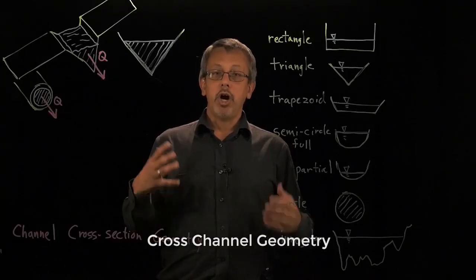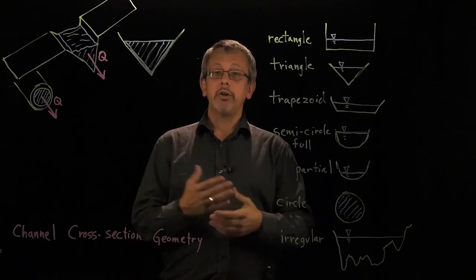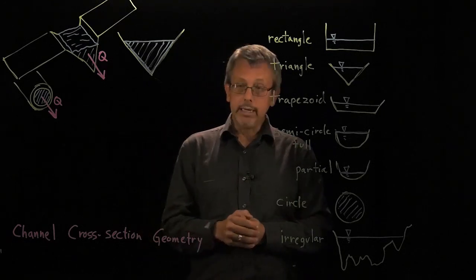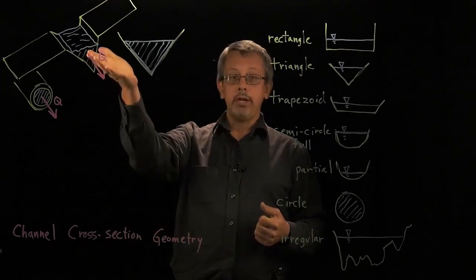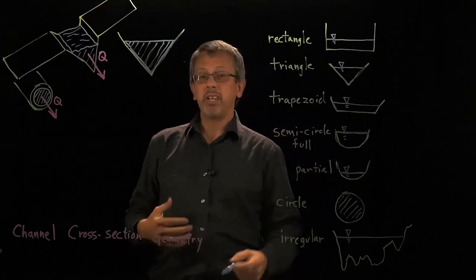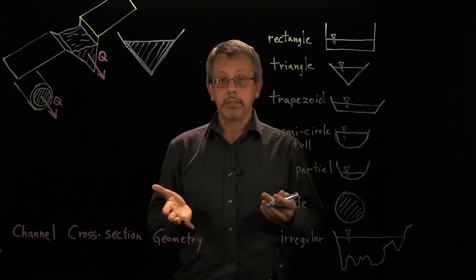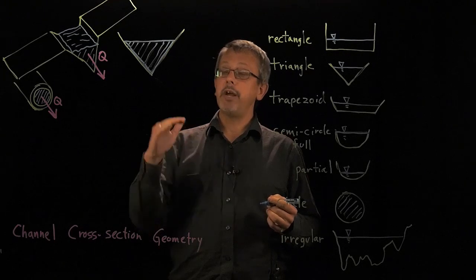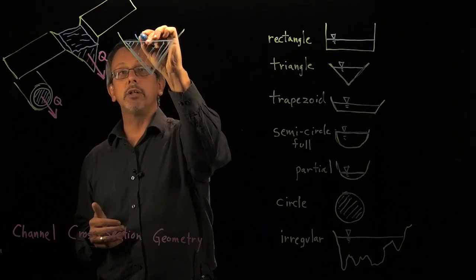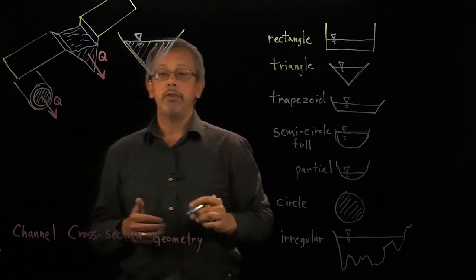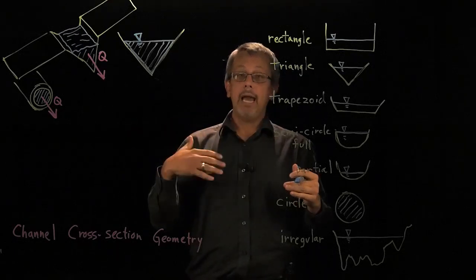Today we're going to talk about the geometry of a channel cross-section and the measurements useful for determining the amount of flow in a channel. We'll consider open channel flow — an open channel is something like a river or stream, with no top, and a water surface exposed to air. We represent that surface with a small triangle notation, called the free surface — the surface between the fluid and the atmosphere.